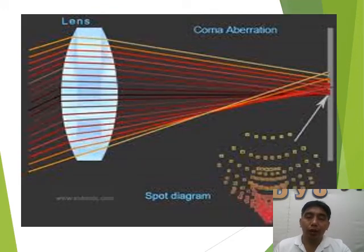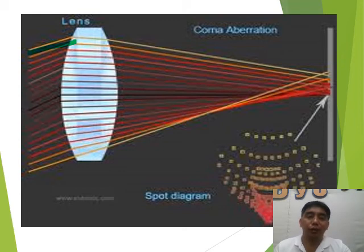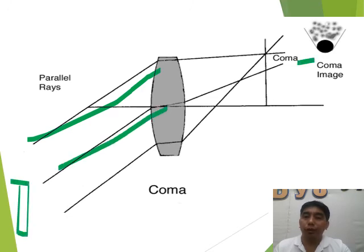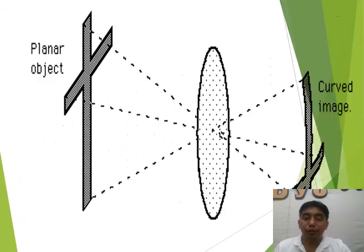Another defect is coma aberration. Coma aberration occurs when rays of light enter the lens obliquely — from a different direction — and the lens cannot properly focus them. The result is a comet or pear-shaped formation appearing in the photograph, either on the side, in the middle, or at the bottom. Another defect is astigmatism, which occurs when you can no longer see a sharp cross — the image appears curved.